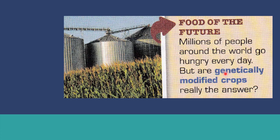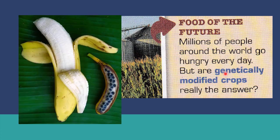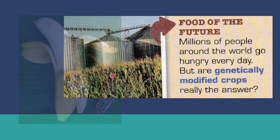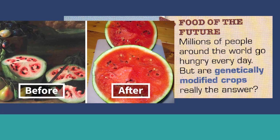Some examples of genetically modified crops include bananas. Originally bananas had many seeds — scientists said, 'How are we going to eat this? There are so many seeds!' So they tried to change the genes until we have the nice seedless bananas we enjoy today. Another example is watermelons — before, they didn't have much flesh, but now we can enjoy all the flesh.